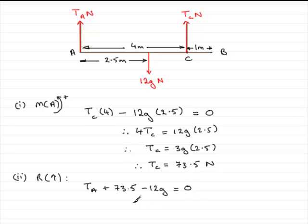So I just need to rearrange this, make Ta the subject. Ta equals 12g minus 73.5. Take g as 9.8. Work it out on your calculator and you get the tension in the rope at A turns out to be 44.1 Newtons exactly. So that brings us to the end of the first part then of this question.